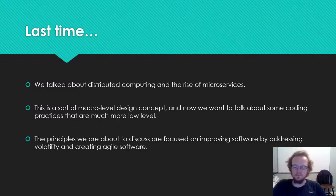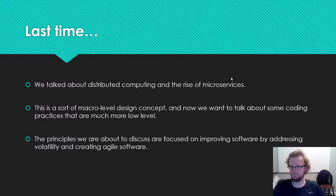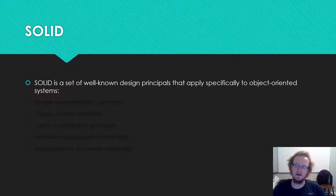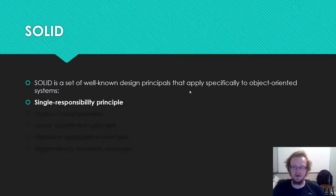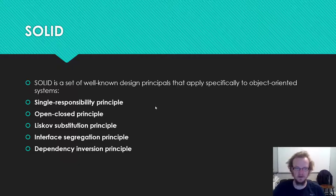The SOLID principles are focused primarily on understanding the impact that requirements changes have on specific pieces of code and how to address those impacts by creating software that is as agile as the processes we talked about several weeks ago. This is a well-known set of principles with TED talks, books, and research articles written about it. It boils down to five main concepts: Single Responsibility, Open-Closed, Liskov Substitution, Interface Segregation, and Dependency Inversion.